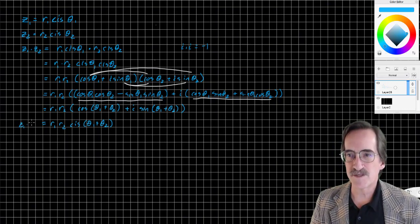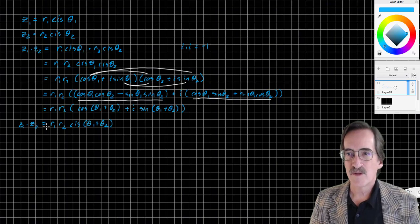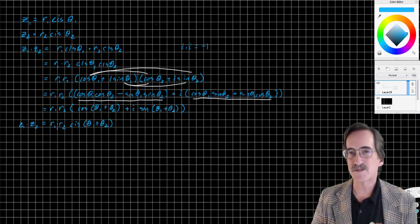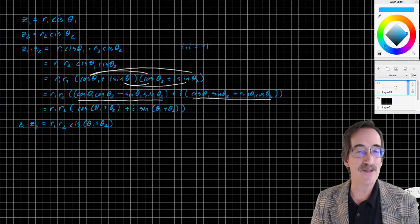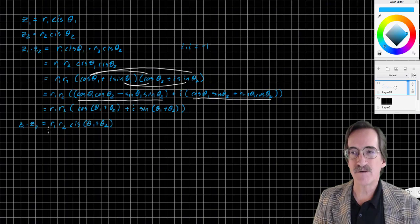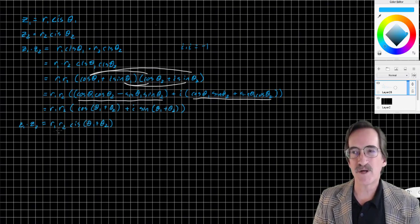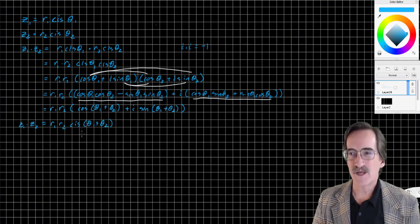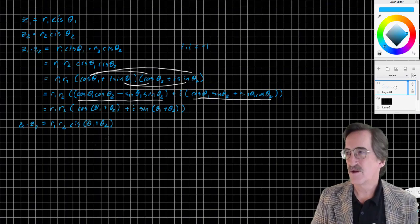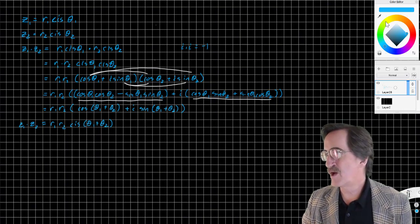Z1 times Z2. You multiply the radius and you add the angles. That's it. To multiply two complex numbers in polar form, you multiply the radius and you add the angles. Let's apply it.